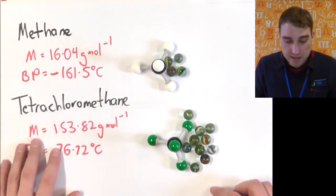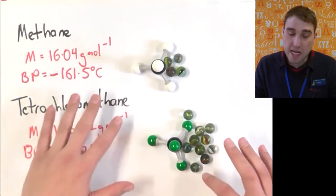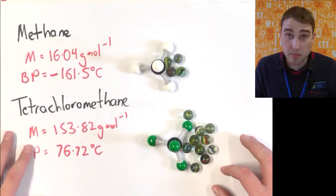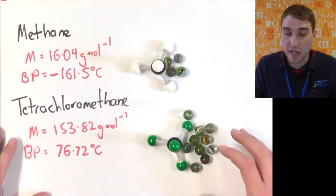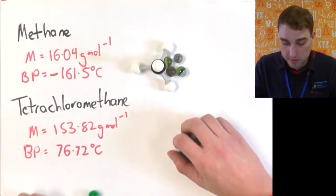So molar mass is one thing. As long as we're maintaining the same shape, we can compare the molar mass and see what effect that's going to have on the melting and boiling points.